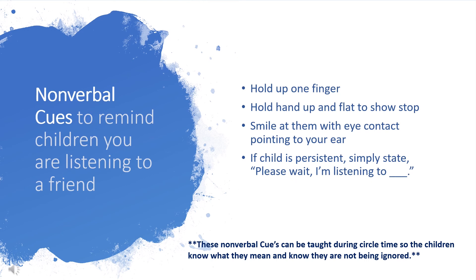Have you ever had a child speaking to you and five other kids want to talk to you at the same time? How do you show them you want to hear their stories too, but you need to finish listening to this child first? Some ways I've found helpful: hold up one finger to tell the child their turn will be next, or hold up your hand high and flat to show a stop sign — that signals 'stop, please wait' without interrupting the other speaker. Sometimes all it takes is a smile with eye contact, pointing at your ear to show you're listening to their friend. For persistent children, simply state 'please wait, I'm listening to' and then say their friend's name. These nonverbal cues can be taught during circle time so children know they're not being ignored and will eventually get their turn.